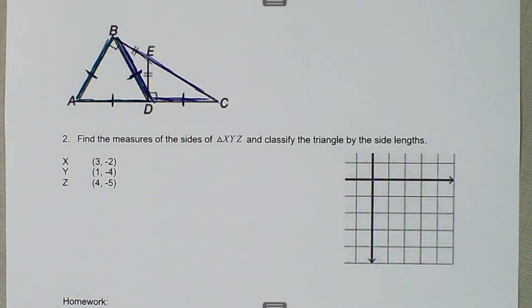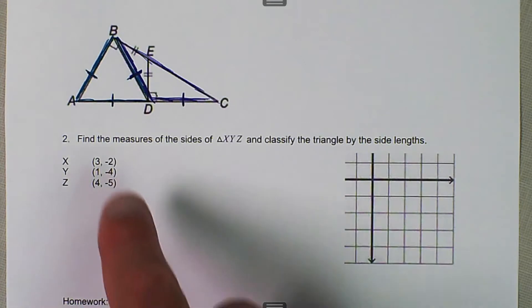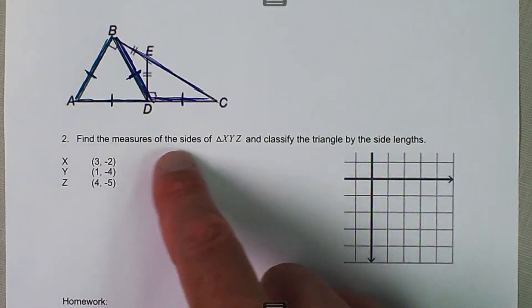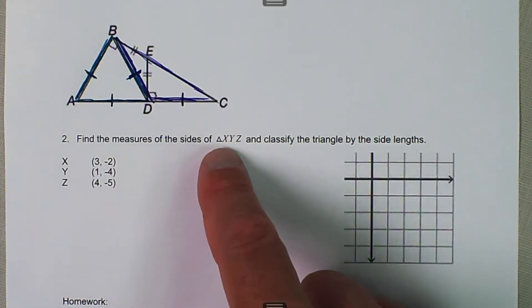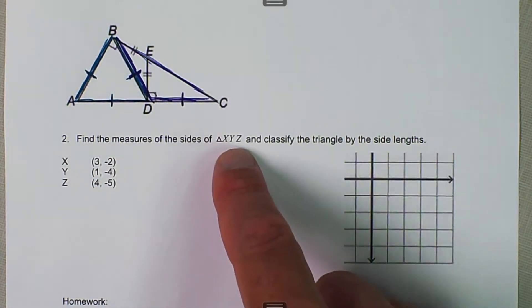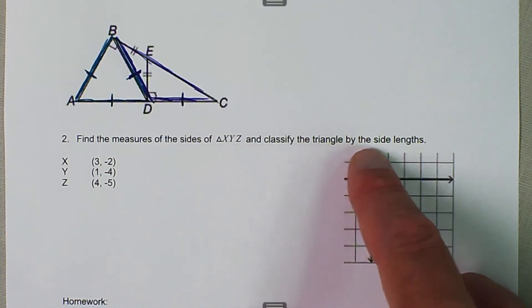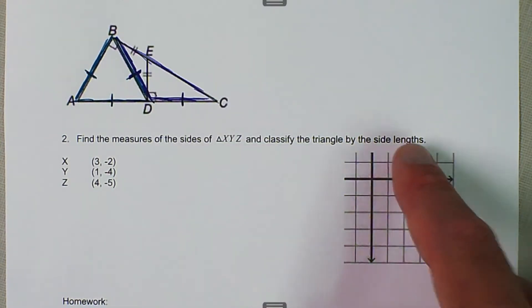We are talking about classifying triangles, and in this case, for example 2, it says find the measure of the sides of triangle XYZ and classify the triangle by the side lengths.